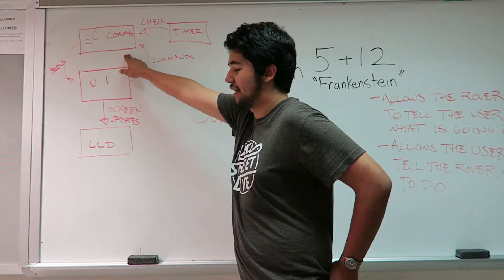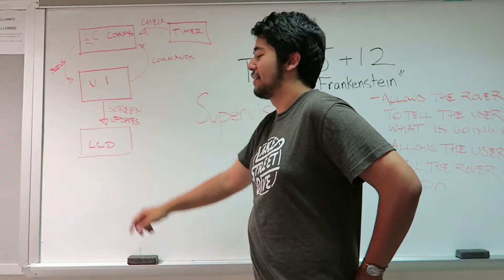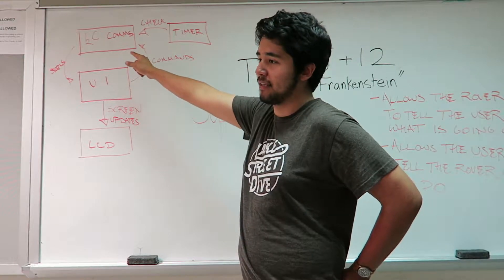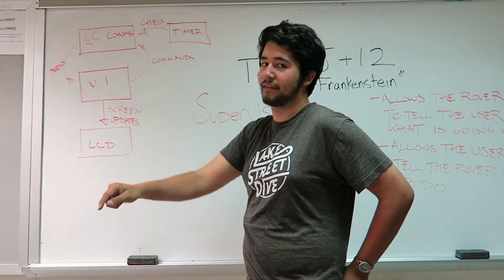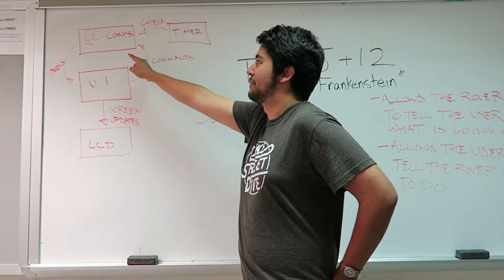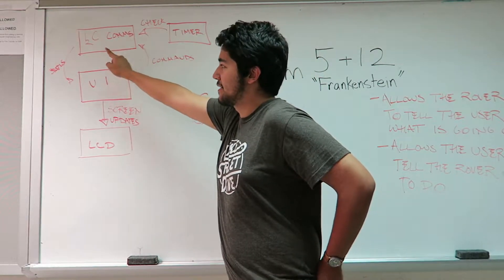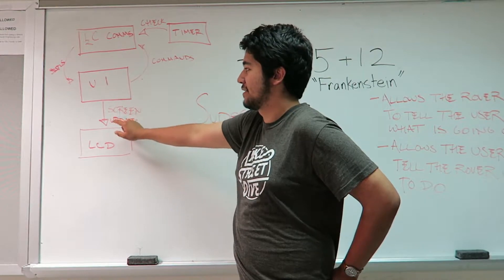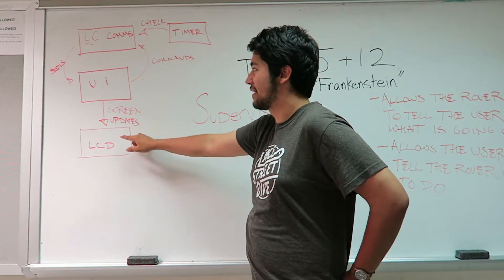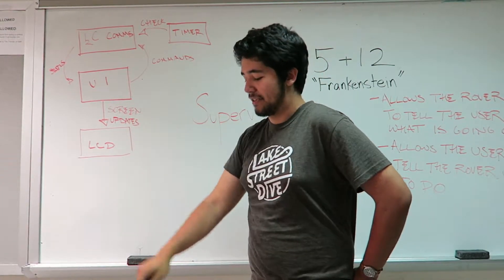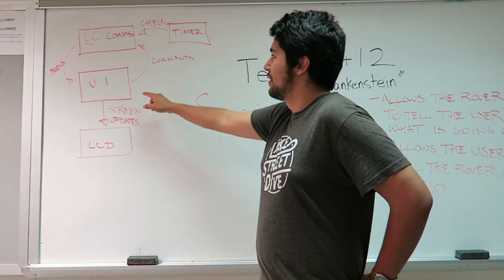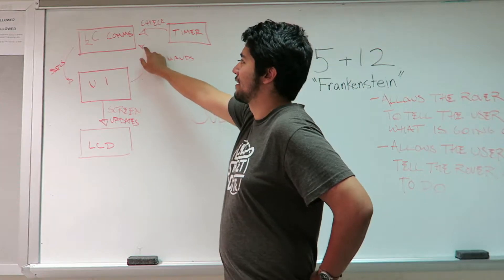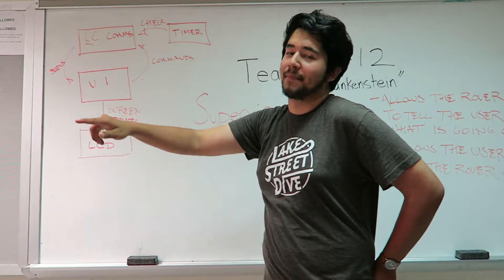At the bottom level there's I2C communication. The ARM microcontroller board is communicating with a PIC microcontroller that's running a wireless communication module. It sends status messages up to the user interface task. The user interface task sends screen updates up to the LCD task, which ultimately drives the display panel on the board. The UI task sends commands back down to the I2C communication task where they're sent back to the rover.